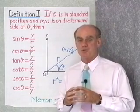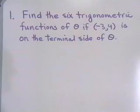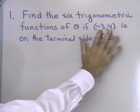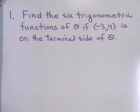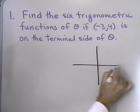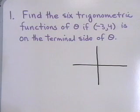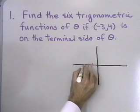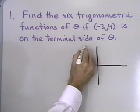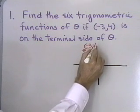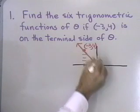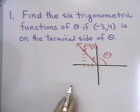What I want to do next is work some problems involving this definition. For our first problem, we want to find the six trigonometric functions of θ if the point (-3, 4) is on the terminal side of θ. Let me begin by plotting that point. I'll draw a coordinate system — going back 3 and up 4, so this will be the point x = -3, y = 4, and this is the terminal side of θ.